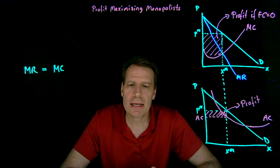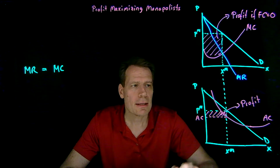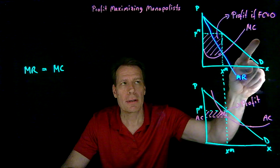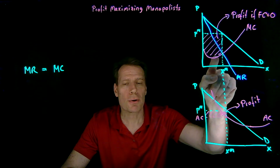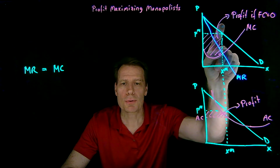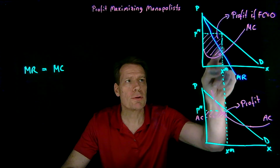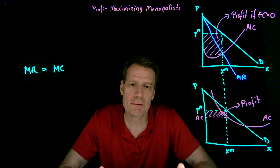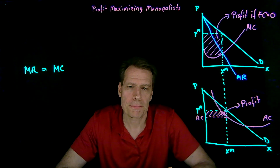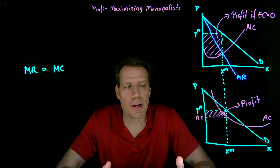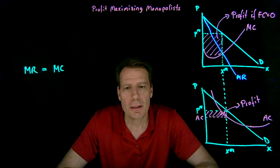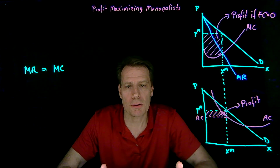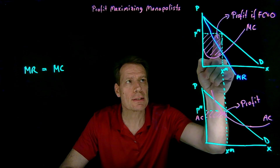The only way the monopolist cannot make a profit is if the fixed costs are so high that the average cost curve lies above the demand curve. If the average cost curve lies above the demand curve, then at the quantity where marginal cost intersects marginal revenue, the average cost would lie above the price. So the total revenue box would be smaller than the total cost box, and the firm would be losing money — making a negative profit — by producing where marginal revenue is equal to marginal cost. But as long as fixed costs aren't so high that the average cost lies above the demand curve, the rule that the firm should produce where marginal revenue is equal to marginal cost will give us the profit-maximizing quantity, and then we can simply read the price off of the demand curve.